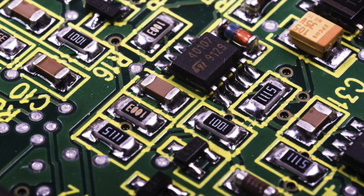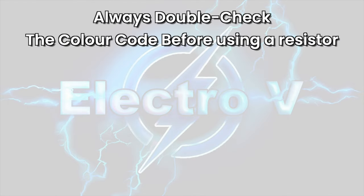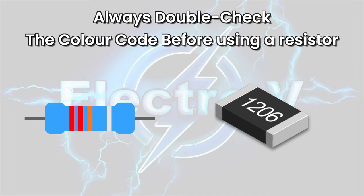Surface mount resistors often use a different coding system, such as a numerical code printed on the resistor's body. Remember to always double-check the color code before using a resistor in a circuit, as mistakes in resistance values can cause significant issues in the performance and safety of electronic devices.